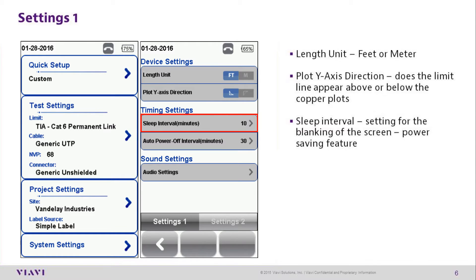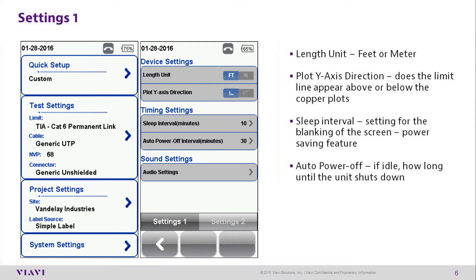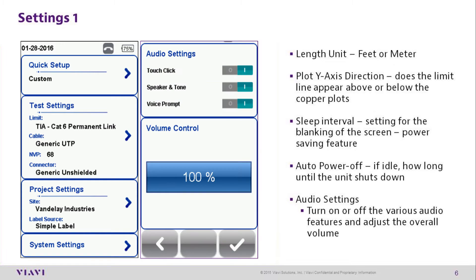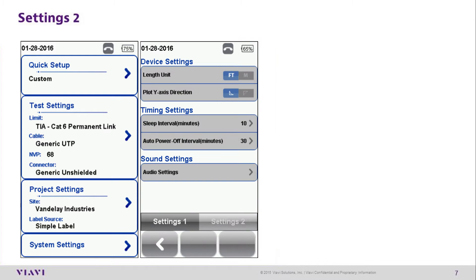Sleep Interval allows you to set how many minutes the certifier screen will stay on before turning off to save power. Auto Power Off allows you to set how long the certifier will stay on before shutting off to save power if left idle. Audio Settings allows you to turn on and off various audio features and adjust the overall volume.